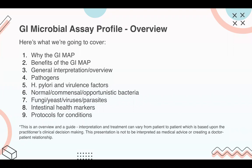Today we're going to cover: what is the GI Map, the benefits of the GI Map, general interpretation and overview, some pathogens on the GI Map, H. pylori and virulence factors, normal commensal and opportunistic bacteria, fungi, yeast, viruses, and parasites, some amazing intestinal health markers, and finally a protocol for a common condition. Just a reminder — this is an overview and a guide. Interpretation and treatment can vary from patient to patient based upon your own clinical decision-making. This presentation is not to be interpreted as medical advice or creating a doctor-patient relationship.